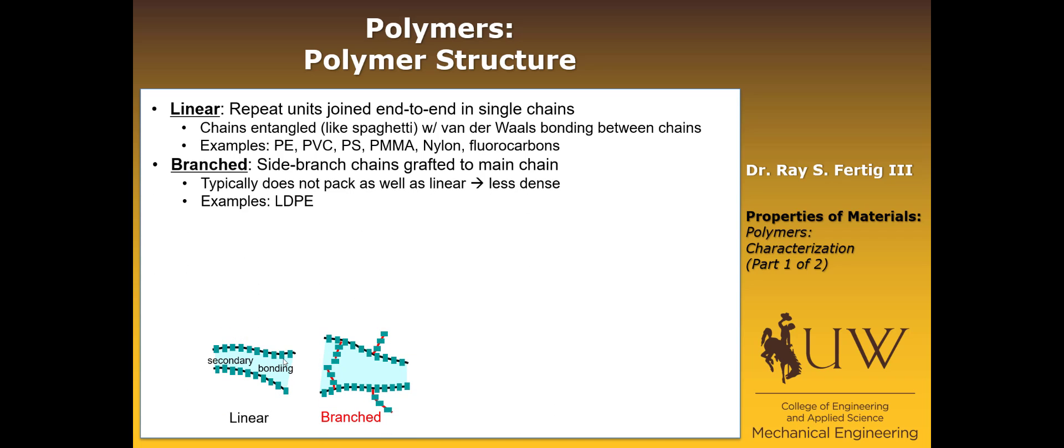A second polymer structure class is branched polymers. It's like linear polymers, except here now we've added these small side branch chains to the main chain. The important feature is that the main chains are still not bonded together by covalent bonds, but they do have these covalently bonded side branches sticking out of them. You can imagine that if you have that, they don't pack as tightly, so they're typically less dense. One example of these branch structures is low-density polyethylene.